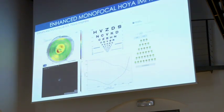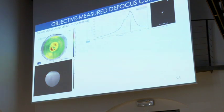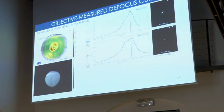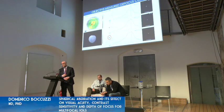This is the HOYA Vivinex Impress lens again, showing the CDRS chart and how the lens works with its refractive error profile and defocus curves. With more than 4 mm pupil diameter we see one defocus pattern; when we reduce the analysis area to 3 mm and then 2.5 mm pupil diameter, visual acuity improves and the defocus curves are enhanced specifically for near vision.